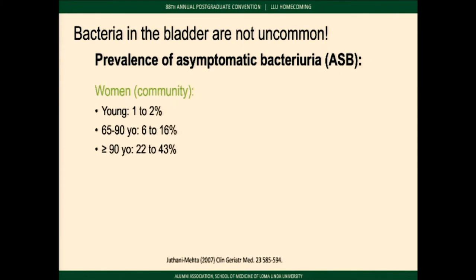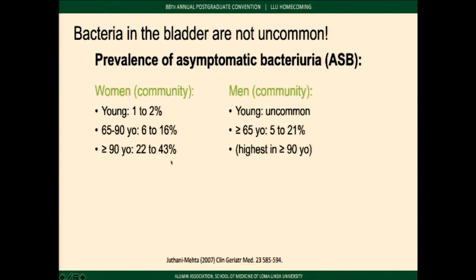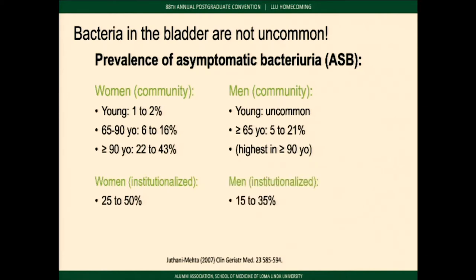It turns out bacteria in the bladder are not uncommon. The prevalence of asymptomatic bacteriuria is pretty high. In young women in the community, 1-2% have bacteria in the bladder that doesn't need treatment. In women aged 65-90, it's 6-16%; over 90, it's 22-43%. In institutionalized patients in skilled nursing facilities, up to 50% have bacteria with no urinary tract infection. And for those with an indwelling catheter? 100%.